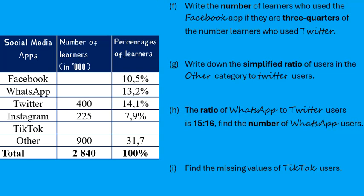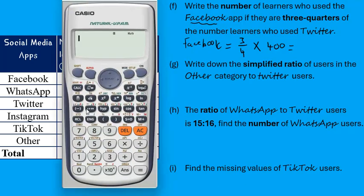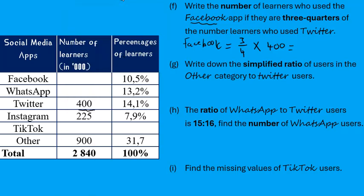Write down the number of learners who used Facebook, given that it is three-quarters of the number of learners who use Twitter. Three-quarters means three out of four, so we calculate three-quarters times the number of Twitter users. From the table, Twitter has 400. So three-quarters of 400 gives us 300. But all values in this column are given in thousands, so it is actually 300,000 learners who use Facebook.